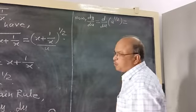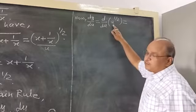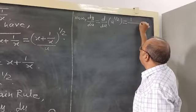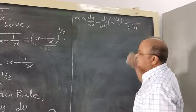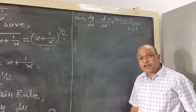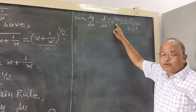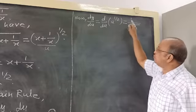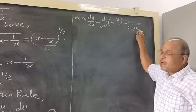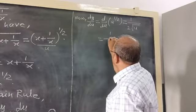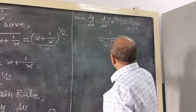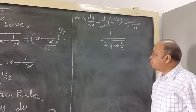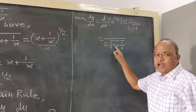dy by du: y in terms of u is u raised to the power 1 by 2, which is the same as under root of u. The derivative of under root of a variable is 1 upon (2 times under root of that variable). So dy by du = 1 upon (2 into under root of (x + 1/x)), since u = x + 1/x.